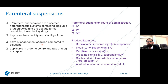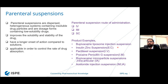One additional slide on parenteral suspensions — some people have ambiguities while manufacturing suspensions versus emulsions. Parenteral suspensions are dispersed heterogeneous systems containing insoluble drug particles and are dosage forms containing low-solubility drugs that improve solubility and stability. They have a longer onset of action compared to solutions and are used to control the rate of drug absorption. They may be given intravenously, intramuscularly, or subcutaneously. Examples include PVPK and nanosome injections, zinc insulin, procaine penicillin, and acetonide. The suspension is one thing; the emulsion is another.